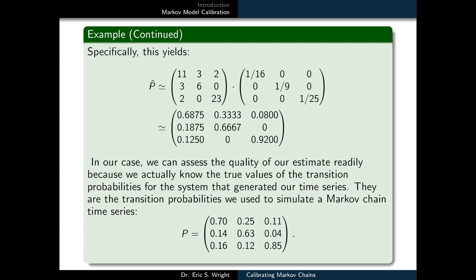So those probabilities are P11 is .7, P12 is .25, P13 is .11, P21 is .14, P22 is .63.